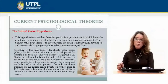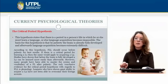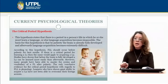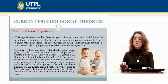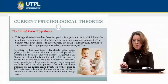The critical period hypothesis states that there is a period in a person's life in which he or she must learn a language, or else language acquisition becomes impossible. The basis for this hypothesis is that at puberty the brain is already fully developed, and afterwards language acquisition becomes extremely difficult. According to this hypothesis, foreign language learning should occur before puberty for best results. If there is a critical period for learning a first language, then the same could apply to acquiring a second language.